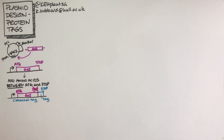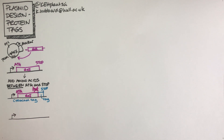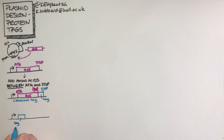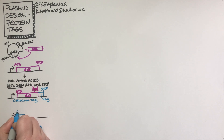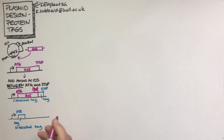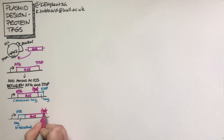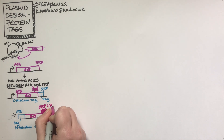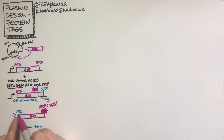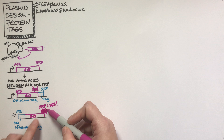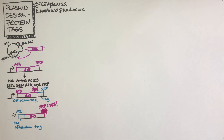The C-terminus is at the end of the protein. We could also have a design where we put the tag at the N-terminus — at the start of the protein. In this case the ATG needs to be at the start of the tag sequence, then we have our gene of interest, and we do have a stop codon at the end of the protein. So: ATG, then the tag, then the gene of interest, then a stop codon at the end.